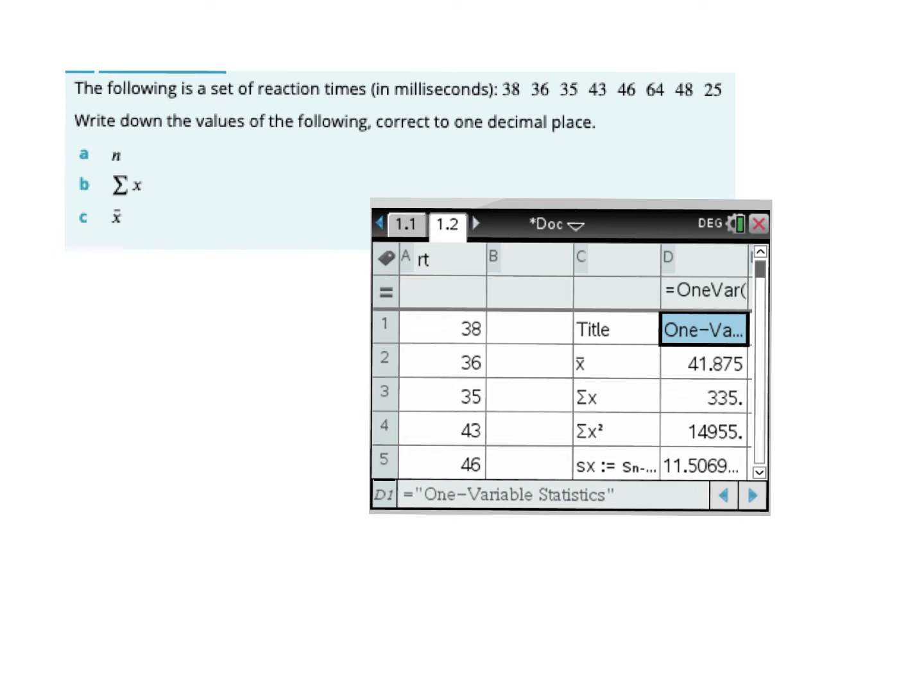So the following set of reaction times were given. So I've popped it into a list in my calculator. I gave my list a little name, RT, reaction time. Now to get all the stats, it's the same as when you go to get the Q1 and all that. So to get, remember you pop your list in, you've already done this before, but I'm practicing.